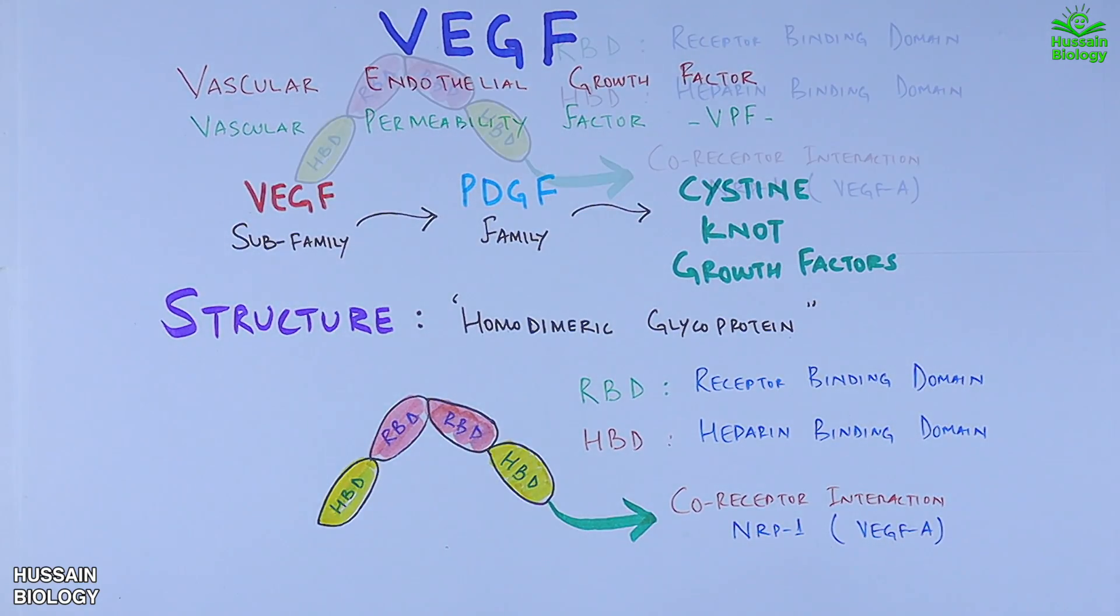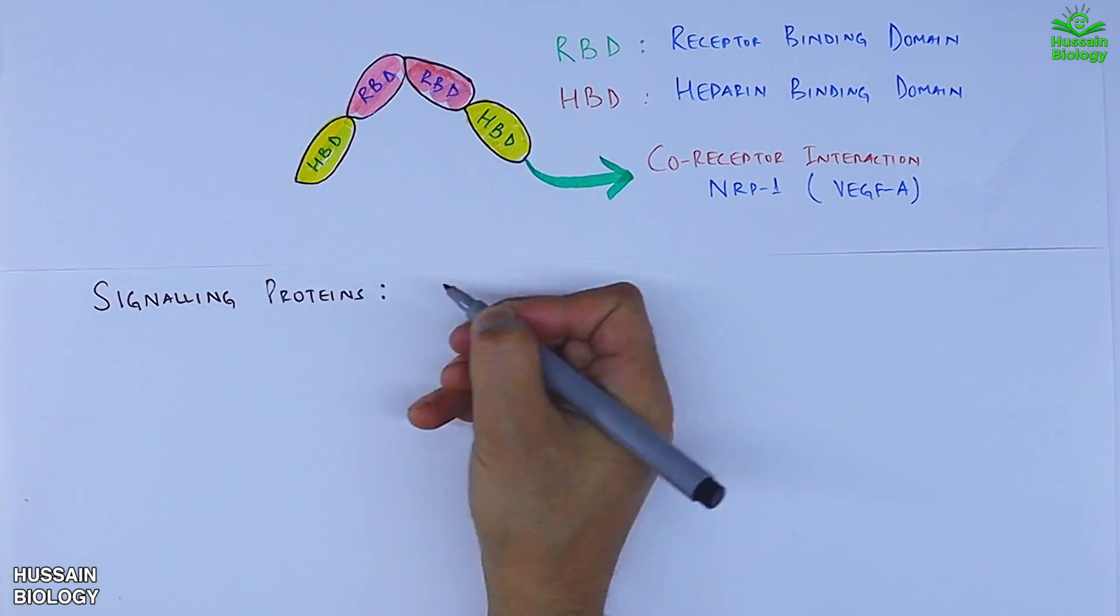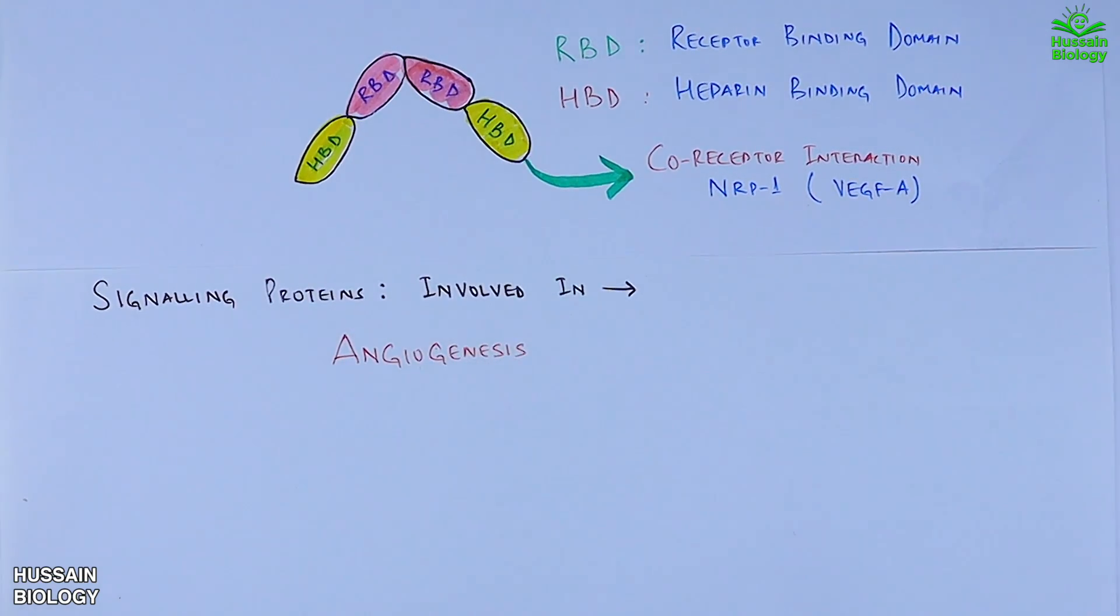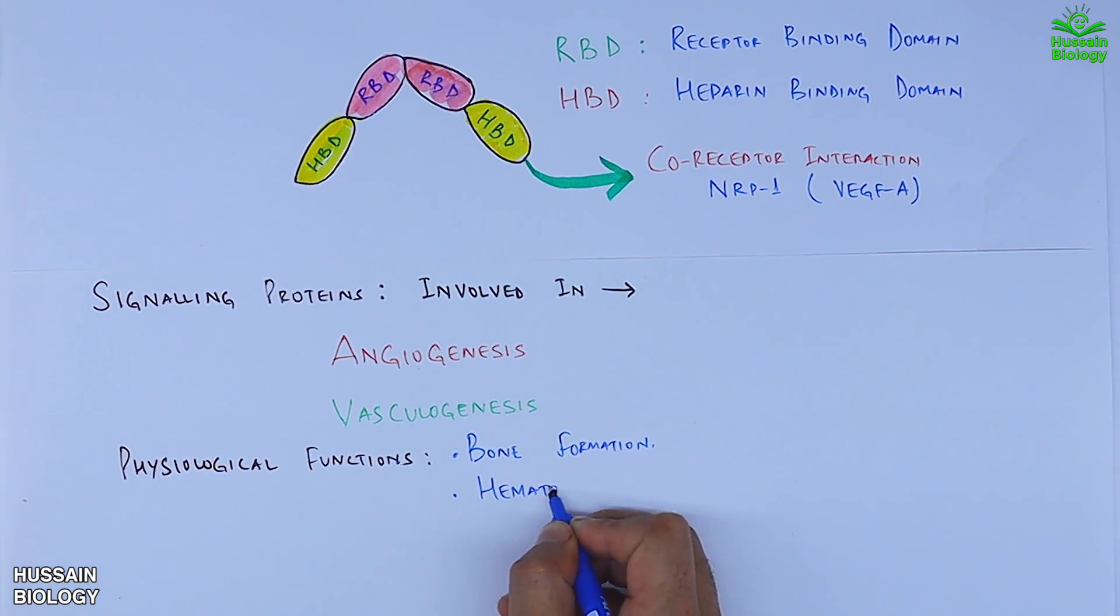These signaling proteins are involved in angiogenesis and vasculogenesis. There are some physiological functions in which VEGF directly or indirectly is involved, like bone formation, hematopoiesis, and wound healing, and there are some other functions as well.